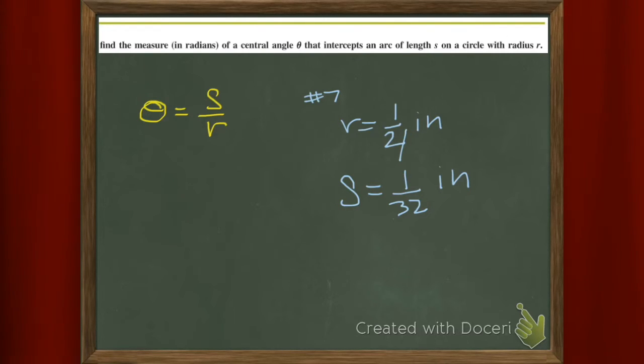So we need a problem. Our radius is one-fourth. Our arc length is one-thirty-second. How many radians is that? So I take that and I plug that in there.